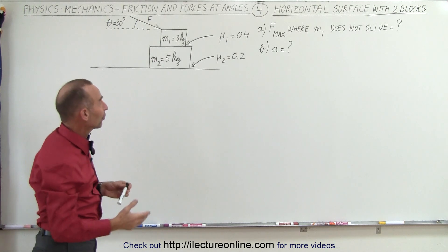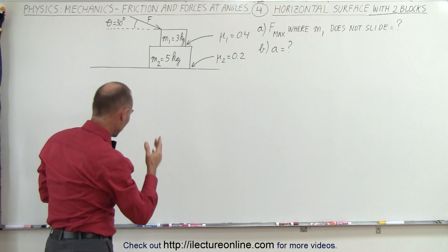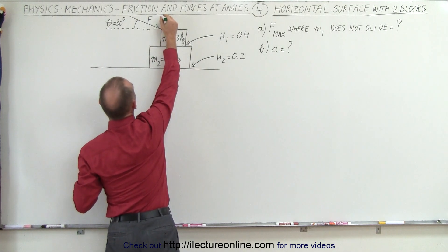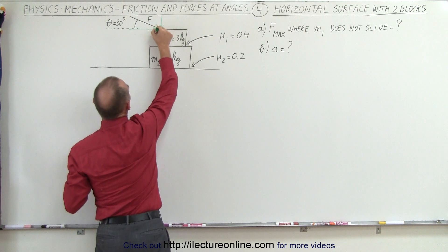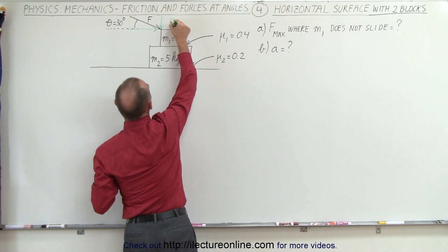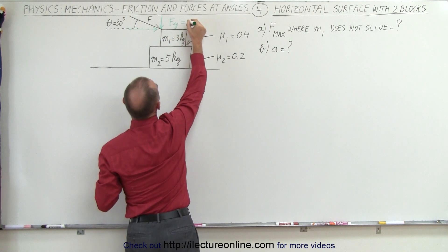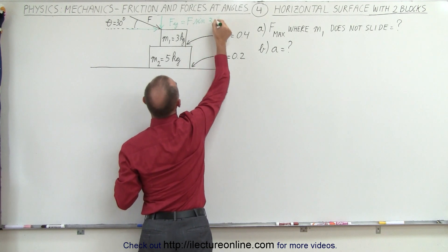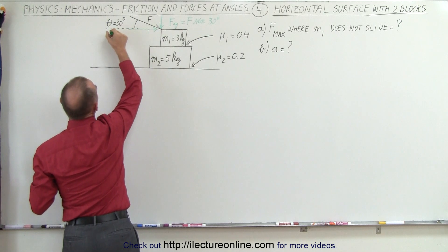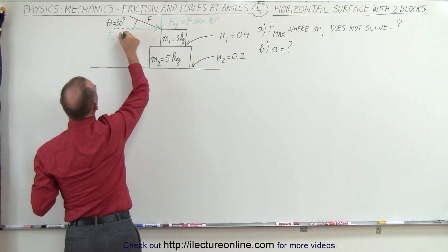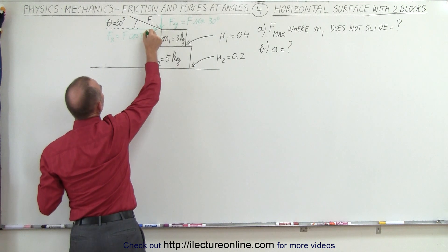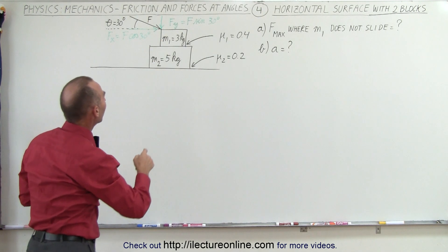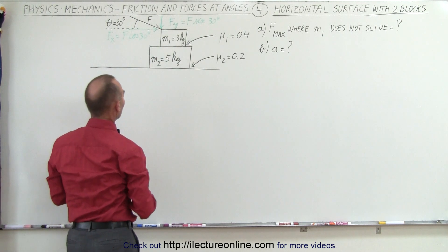Let's start with the first part: what's the maximum force? To understand that, let's divide the force into its vertical and horizontal components. We have the force in the y-direction, which is equal to F times the sine of 30 degrees, and the force in the x-direction, which is equal to F times the cosine of 30 degrees. Those two components will help us determine the forces between the two surfaces.